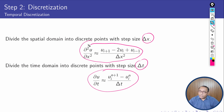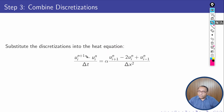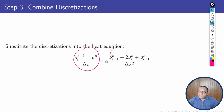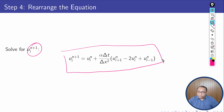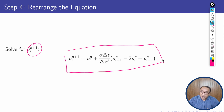Substituting the finite difference approximations for both ∂u/∂t and ∂²u/∂x² into the equation, the equation reduces to a discrete form. After solving for u_i^{n+1}, the equation reduces to the required iterative form, which we can use to apply the finite difference scheme and find the solution over the domain.